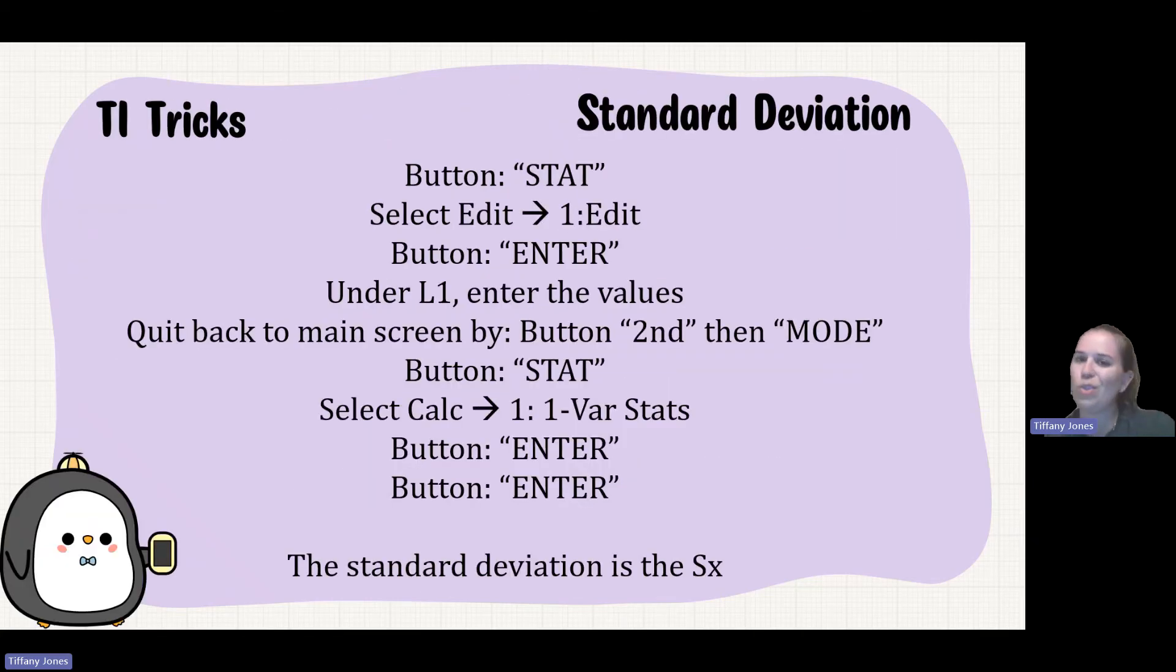Now, there is a way to shortcut this using your calculator. You are allowed to use a TI. So these directions are based off of TI-84. You click the button for stat, you then click edit, and you press number one, which is edit. You're gonna press the enter button under L1, you'll enter each of your values. You'll then quit, press the second mode, you'll go into stats, you'll do the one-variable stats, press that enter button twice, and then the SX is gonna be your standard deviation.